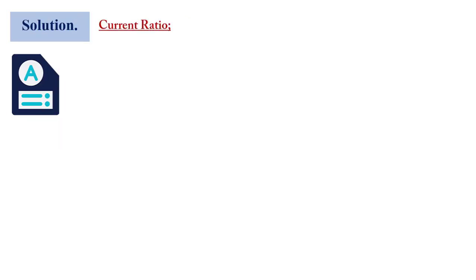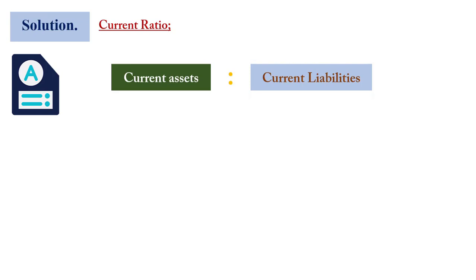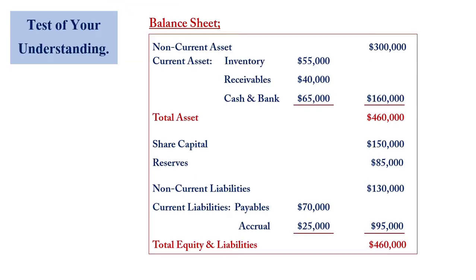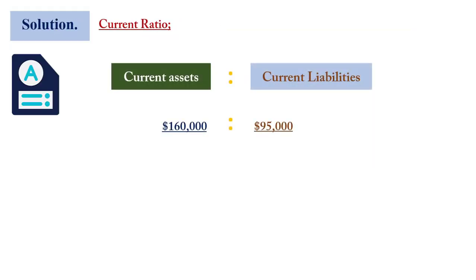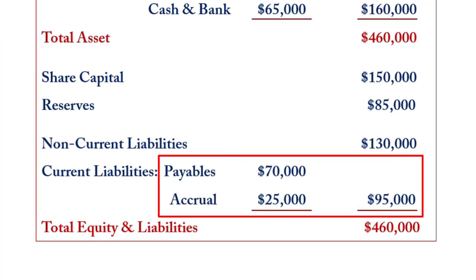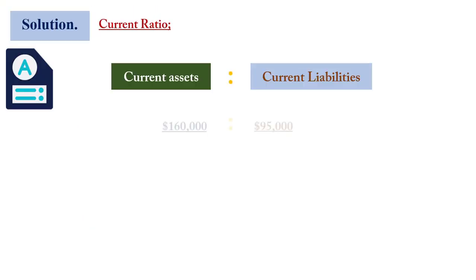So if you are supposed to work out the current ratio or the working capital ratio, the formula again is current assets by current liability. The current assets is $160,000, which is the sum of the inventory of $55,000, receivables of $40,000, and cash and bank of $65,000. And the current liabilities is $95,000, which is the sum of payables of $70,000 and accruals of $25,000. So if you break it down, you are going to get 1.68 to 1. It means that for every one dollar of current liabilities, there is a current asset that can pay for it in excess of $0.68. Also you can explain it in such a way that the current asset available can pay for the current liabilities 1.68 times.